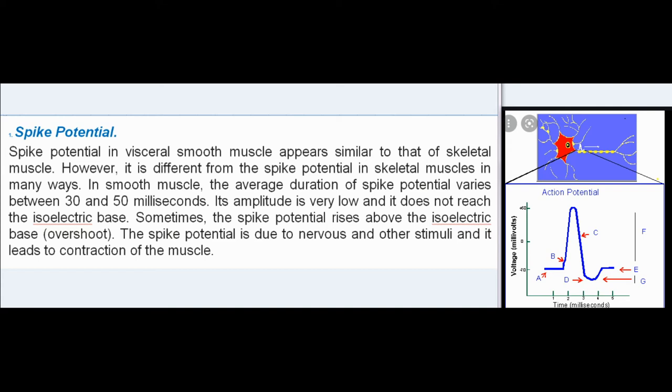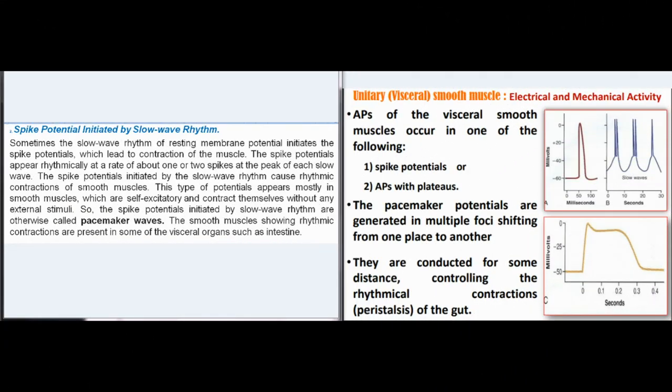The spike potential is due to nervous and other stimuli and leads to contraction of the muscle. Spike potential initiated by slow wave rhythm: sometimes the slow wave rhythm initiates spike potentials, which appear at a rate of about one or two spikes at the peak of each slow wave. These spike potentials cause rhythmic contractions of smooth muscles. This type of potential appears mostly in smooth muscles that are self-excitatory and are otherwise called pacemaker waves. The smooth muscles showing rhythmic contractions are present in visceral organs such as the intestine.